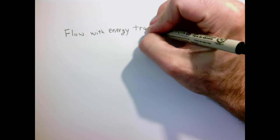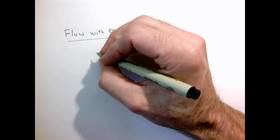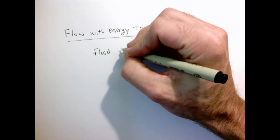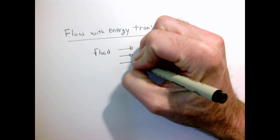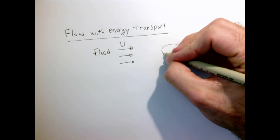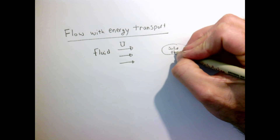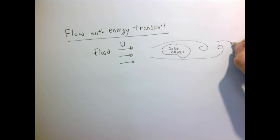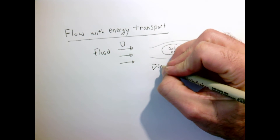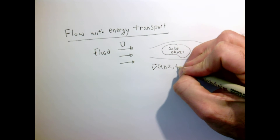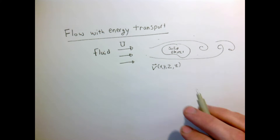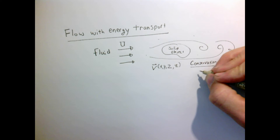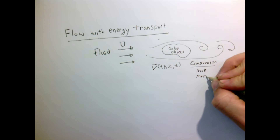Now we want to start talking about flow with energy transport. So far we've done problems such as the following: we have a fluid flowing with some velocity coming at a solid object, and we want to calculate the streamlines and the flow around this object. In principle, we want to calculate the velocity field at every point in the fluid, which is a function of x, y, z, and time. To do this, we needed two conservation laws: conservation of mass and momentum.